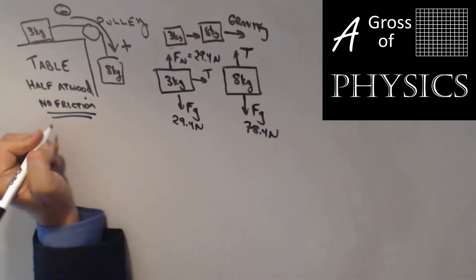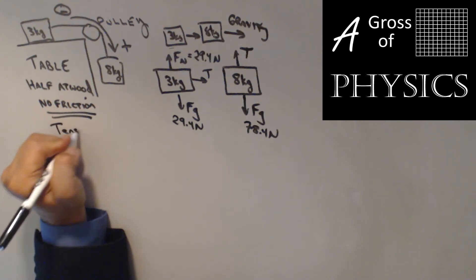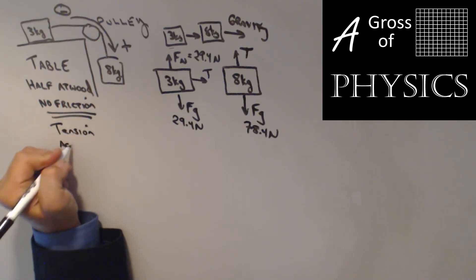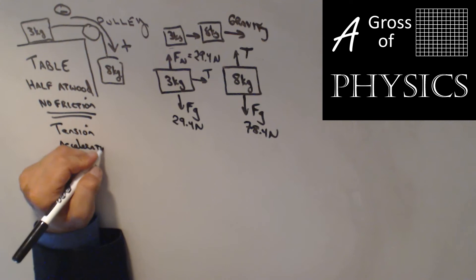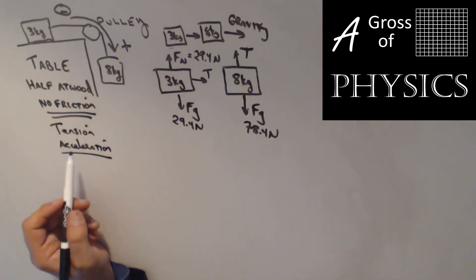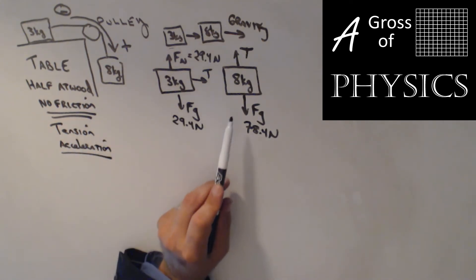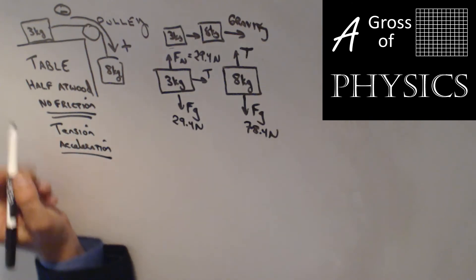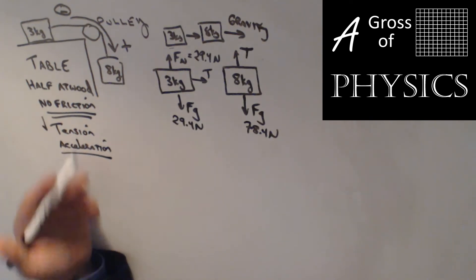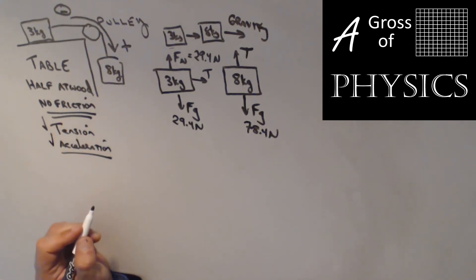There are two things we don't know: tension and acceleration. But since we have the blocks connected by the string, the tension is the same for both. And since they're moving together, the acceleration is the same for both. So we'll have two equations and two unknowns, and we'll be able to solve for both.